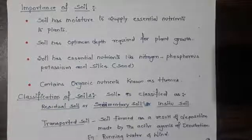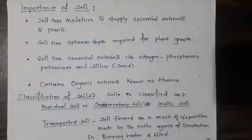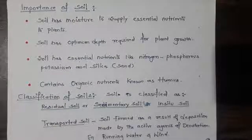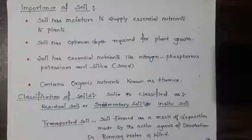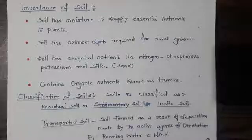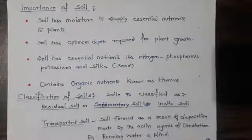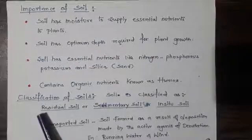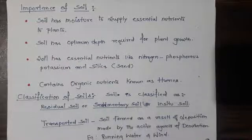Now let's classify the soil. Soils are classified on various bases — sometimes by texture, sometimes by colour, or by the place where they are found. Some soils are found where they are formed, and some soils are formed as a result of transportation or deposition. Based on these observations, there are two types of soil: one is known as residual soil, or sedimentary soil, or in-situ soil.